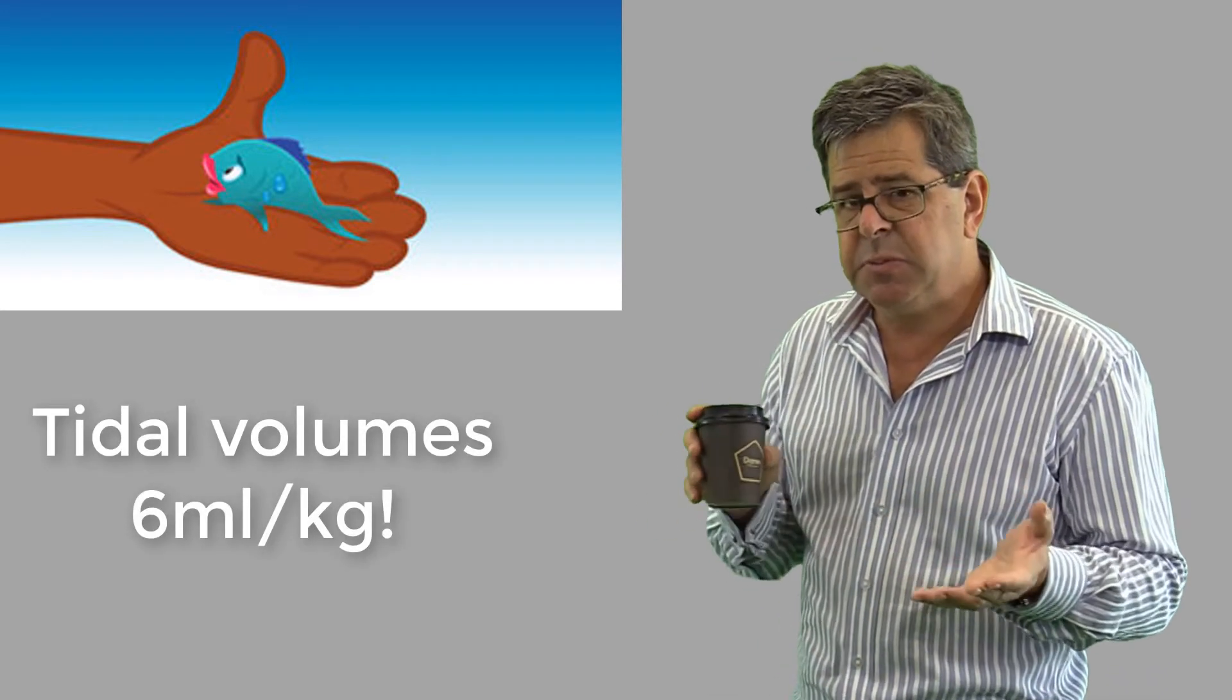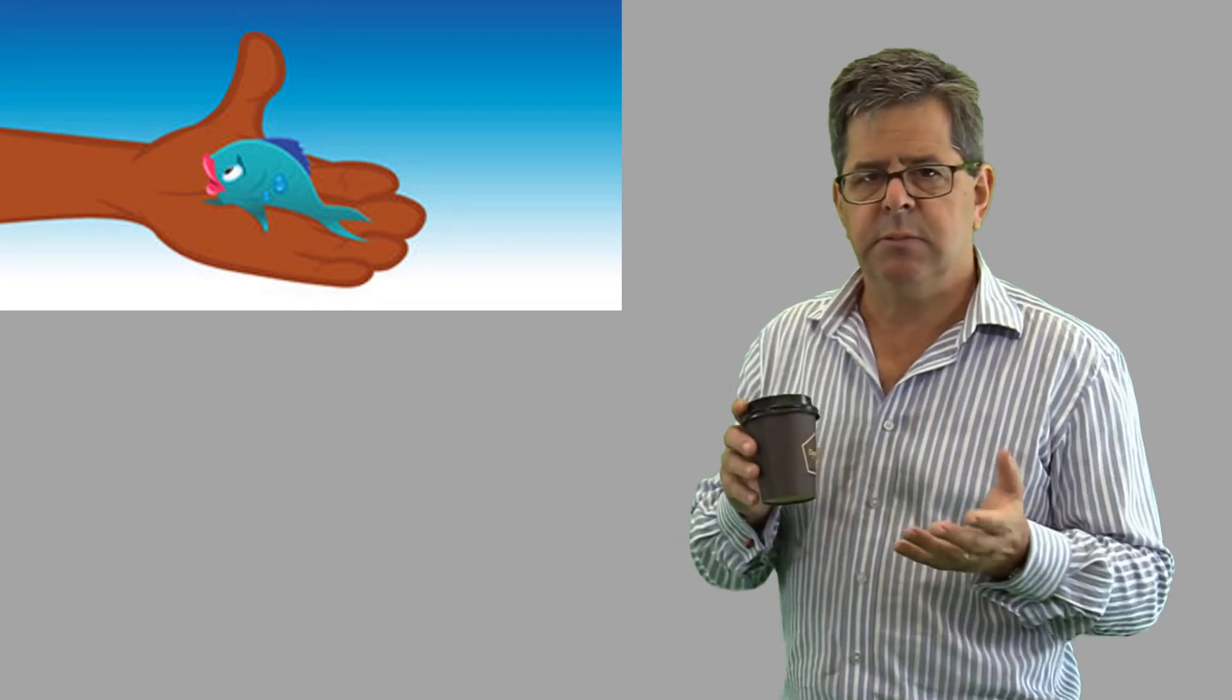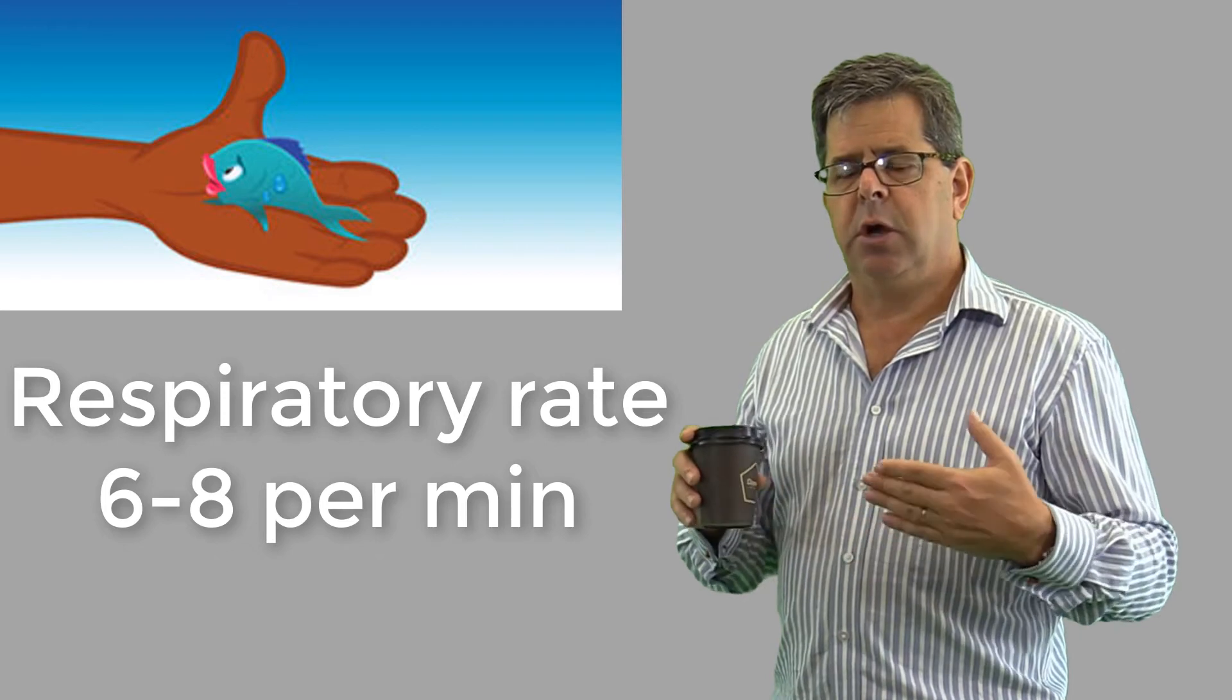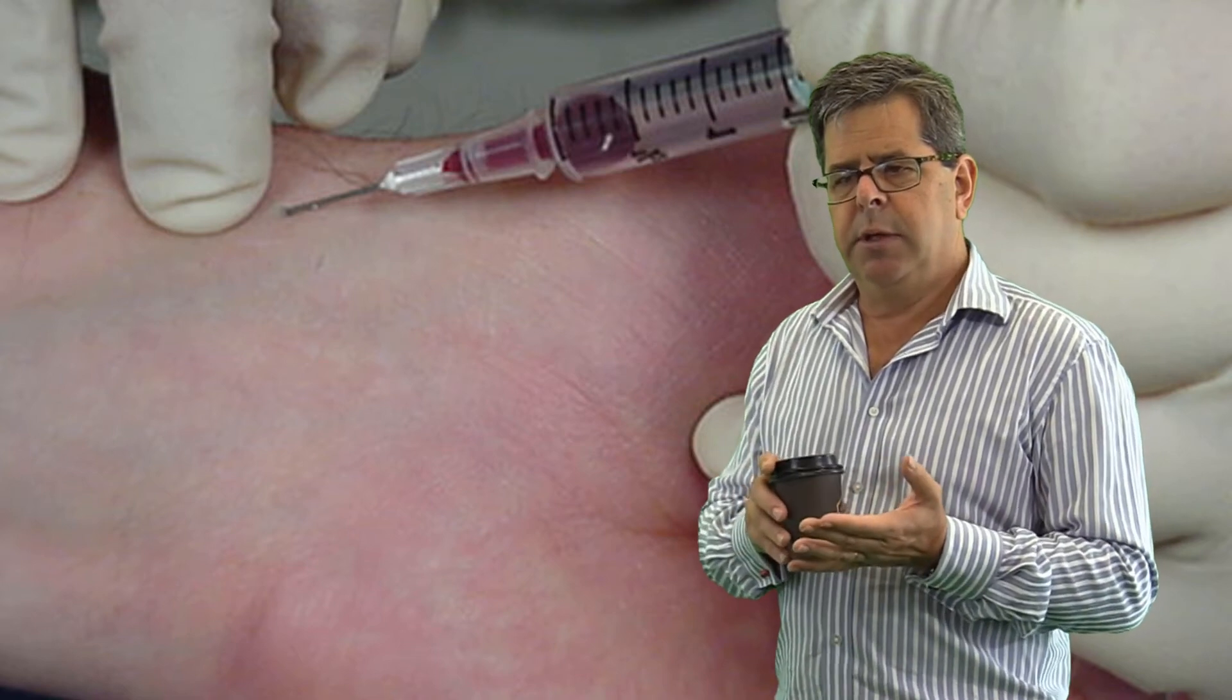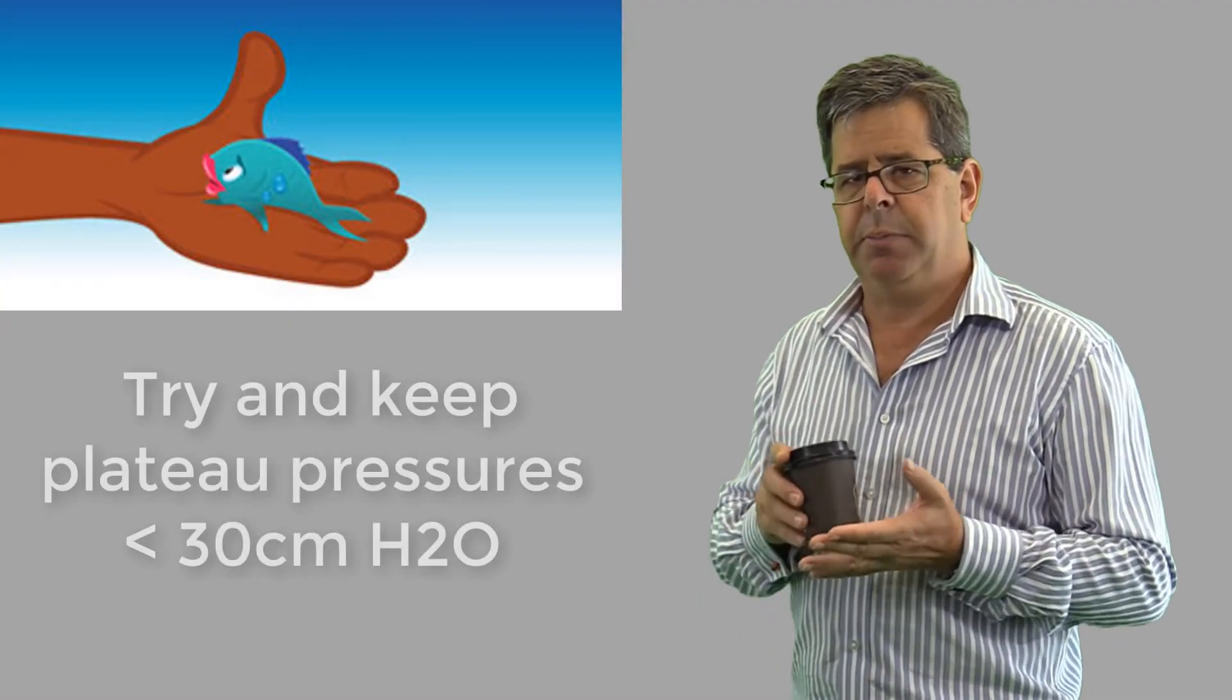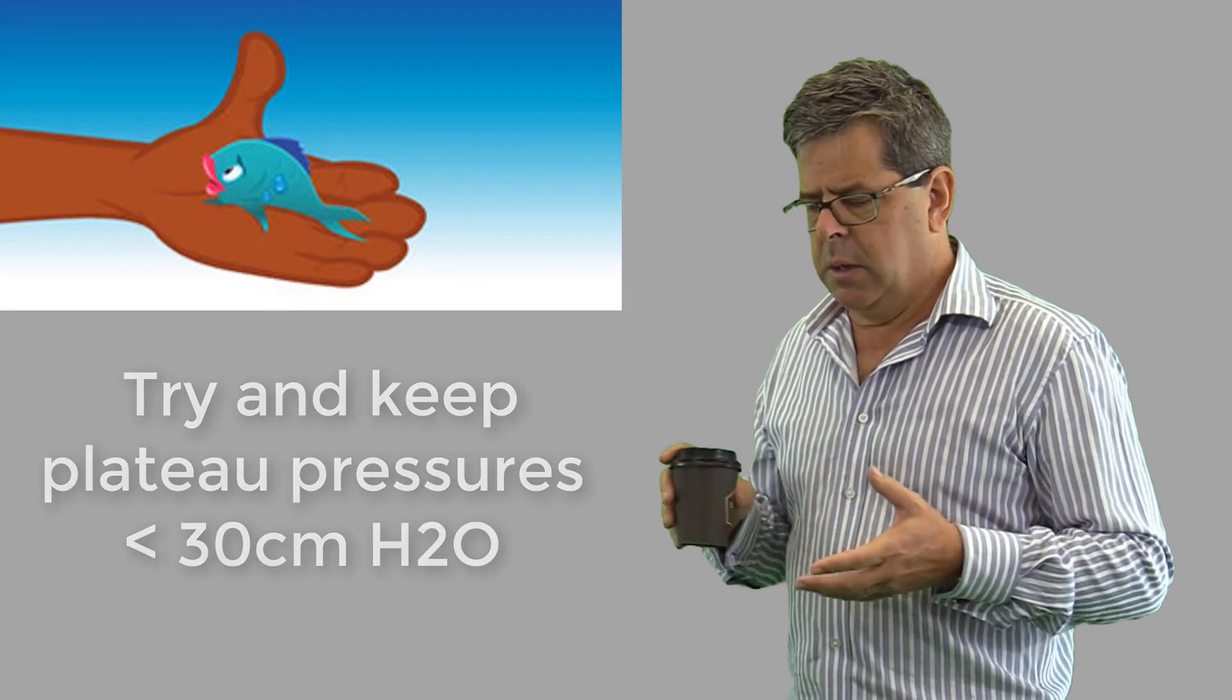So we're talking about pretty small tidal volumes and frequencies. Tidal volumes: 6 mils per kilo. Respiratory rate: 6 to 8 per minute. Then titrate that, check with your blood gases, see if your CO2 is rising. Try and keep—don't worry too much about your peak pressures—but try and keep your plateau pressures less than 30 centimeters of water.